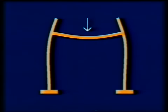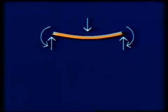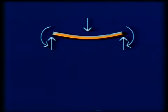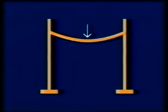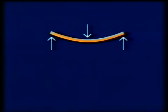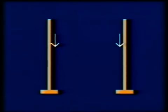Similarly, a beam-column connection can be designed so that when a load is applied to the beam, the beam transmits a moment into the column as well as the vertical load. Alternatively, the beam-column connection can be designed so that the beam transmits only a vertical load to the columns.